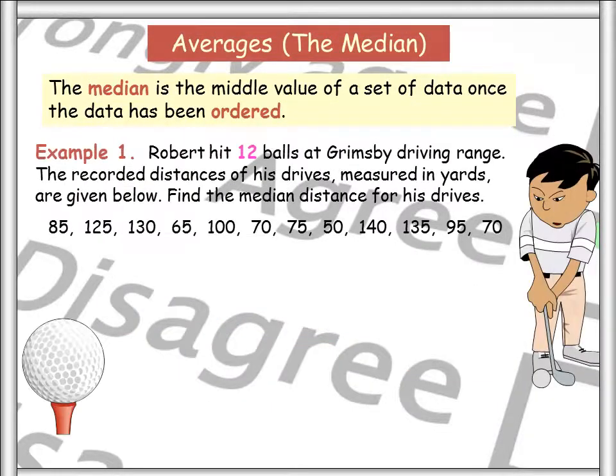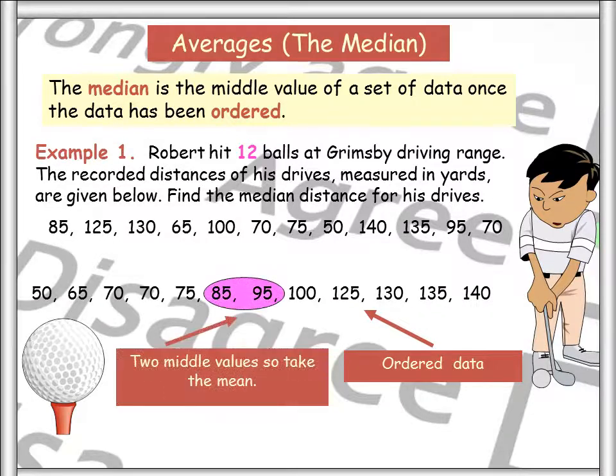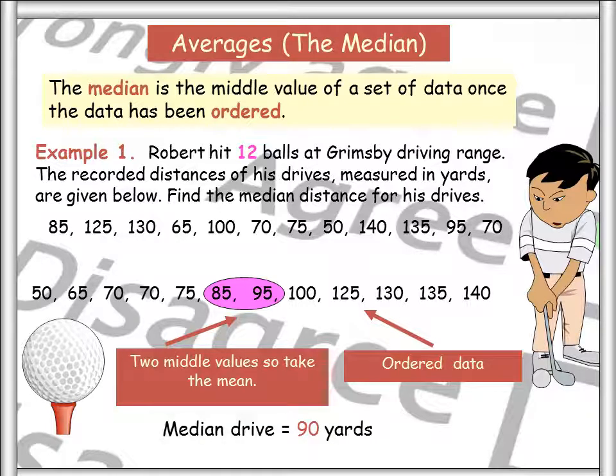With the median, this can occur where actually we have more than one number in the middle. So for example, I've ordered my data and actually my two middle values are 85 and 95. Statistically, you should add these numbers together and then divide by two to find the middle point. But if I'm honest on here, we know that the number in the middle of 85 and 95 is 90. So we would say that in this case, the median is 90.